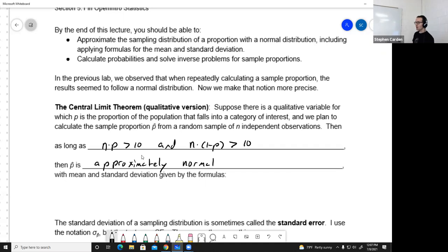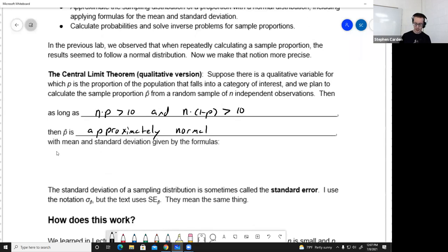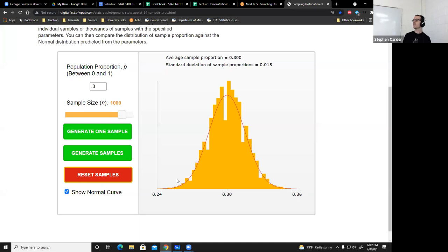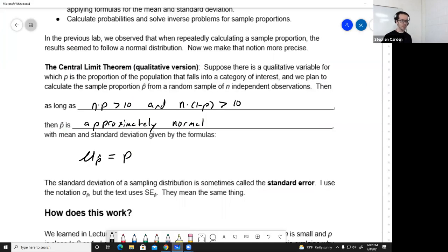As long as you meet those two inequalities, n times p, and n times 1 minus p, both being greater than 10, then p-hat is close enough to a normal, we're going to say it's practically normal, or approximately normal. Every normal has a mean and standard deviation, right? So what should we use as the mean and standard deviation for this normal that approximates p-hat? Well, the mean of the sample proportion is whatever the true proportion is. I think that's pretty obvious. We see that in the simulation, right? Yeah, the sample proportion is random, but where is it centered? Wherever that true proportion p is. So the mean of p-hat is equal to p.